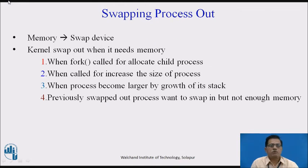Now we go to the second algorithm: swapping a process out. The kernel swaps a process out if it needs space in memory, which may result from any of the following: the fork system call must allocate space for a child process, the BRK system call increases the size of a process, a process becomes larger by the natural growth of its stack, or the kernel wants to free space in memory for processes it had previously swapped out and should now swap in.